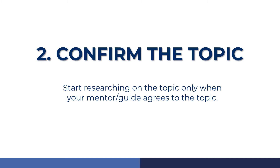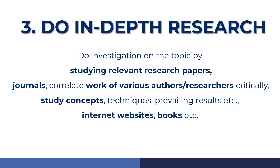After choosing a topic, you must first confirm it with your mentor or guide. You are not supposed to randomly choose a topic and start researching. Only once your mentor or guide finalizes the topic should you start researching and doing in-depth study. Never underestimate this step, because many students start researching and then find that the mentor asks them to change the topic entirely.